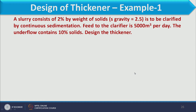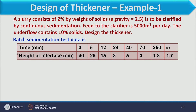Now we illustrate the design of a thickener through an example. A slurry consists of 2% by weight of solid with specific gravity 2.5, to be clarified by continuous sedimentation. The feed to the clarifier is 5000 cubic meters per day, and the underflow contains 10% solid. Batch sedimentation test data giving time and height of interface is available for this system.